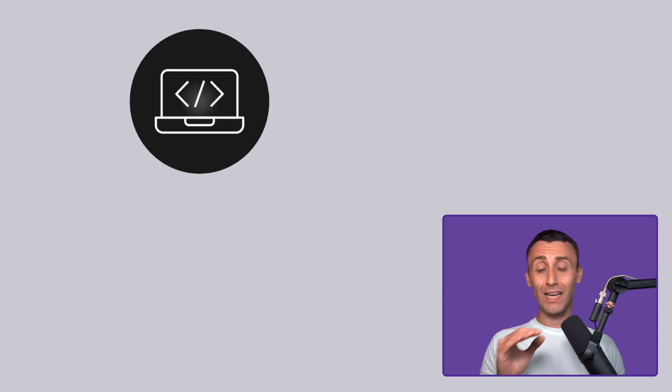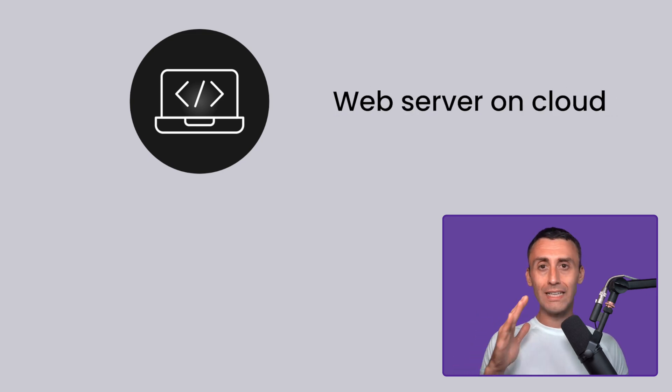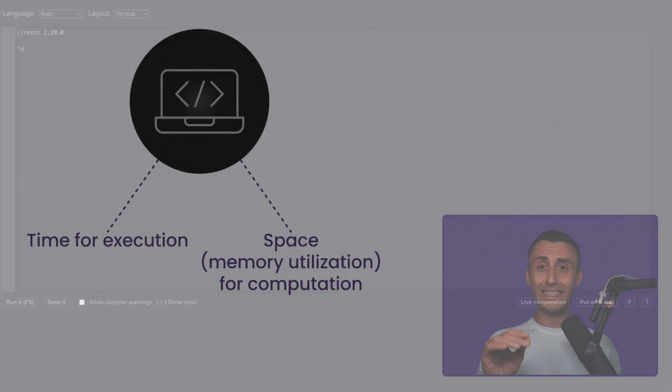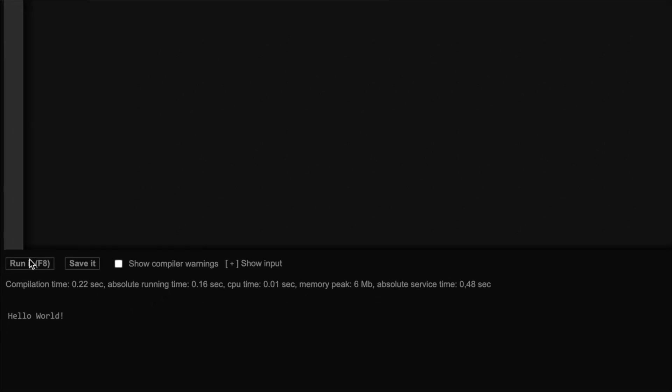Any piece of code that runs anywhere, whether it is your local machine, a client-side web app, or a server deployed on the cloud, takes up some time to execute and some space in memory to do the computations. The basic version of this can be seen when you run any program on your computer. The terminal shows the time taken to run that program.